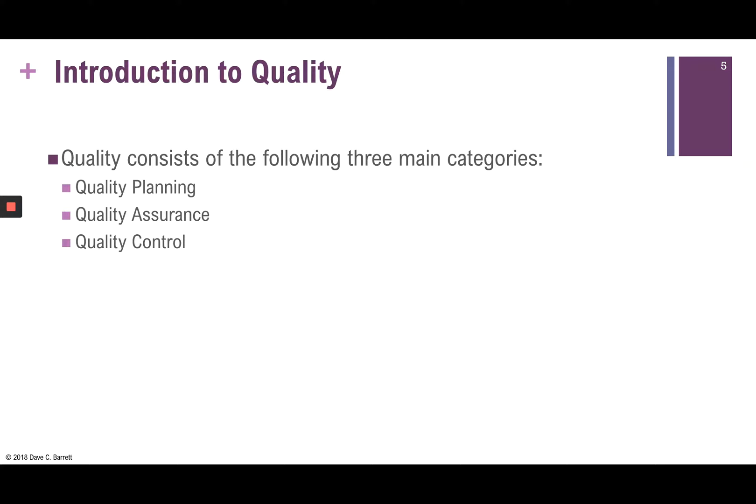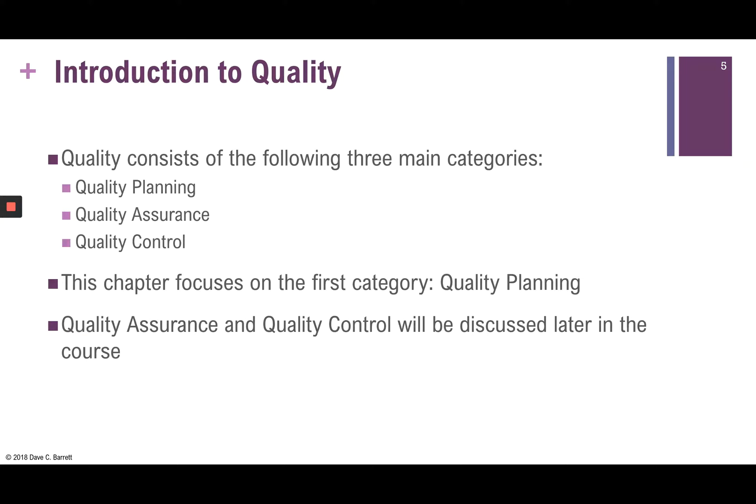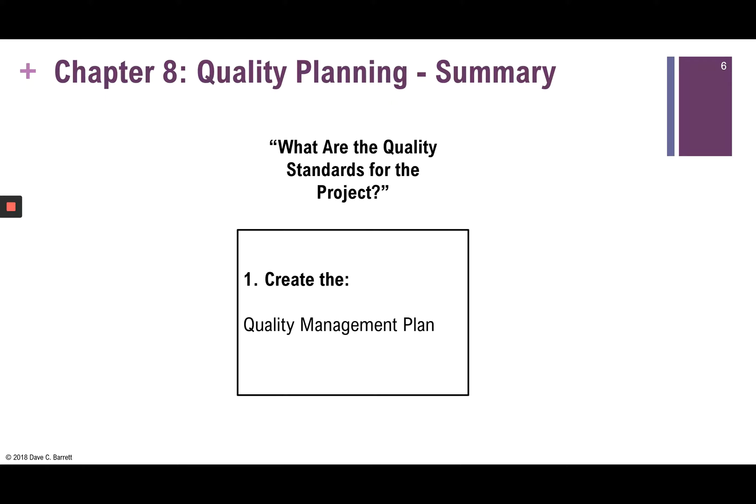Quality consists of three categories: quality planning, quality assurance, and quality control. This chapter focuses on the first category — quality planning. Quality assurance and control will be discussed later in the course, so you will see those topics pop up again in a later chapter.